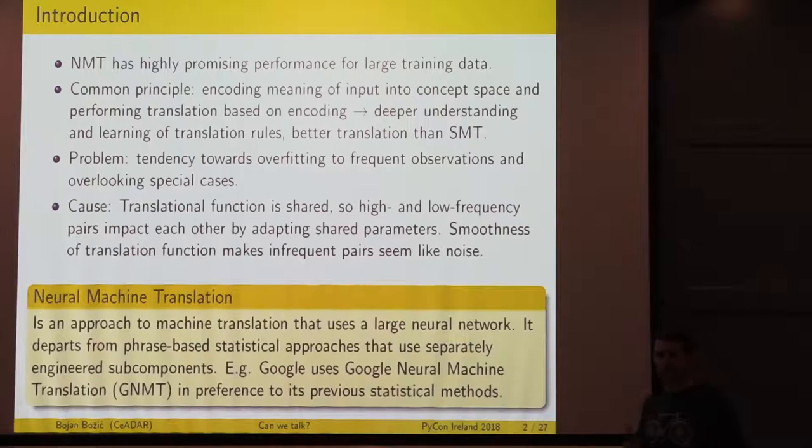Since we are not using a dictionary with frequencies that a statistical approach would do, we're learning how to translate things out of the box. This means that unfrequent words and observations, special cases, could be overlooked. The translational function we use is smooth, so it moves out unfrequent word pairs and sees them as noise.